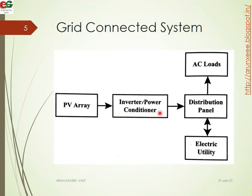The first one is the grid connection system. It is connected to the inverter or power conditioner. The power conditioner is connected to the grid and to the distribution panel. The current from the PV is connected to the electricity and utility grid, and the AC is connected to the grid.